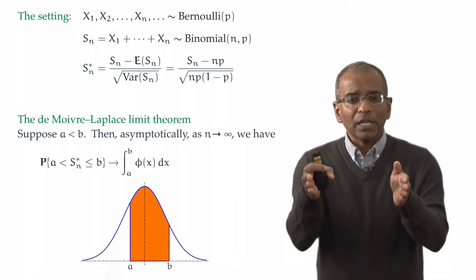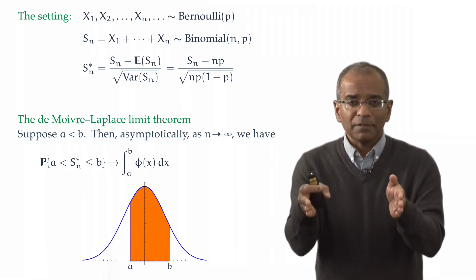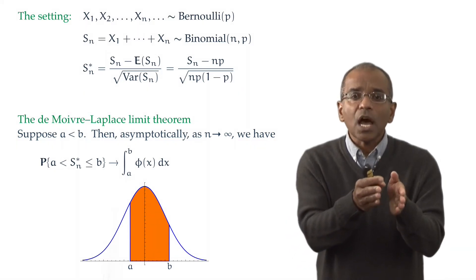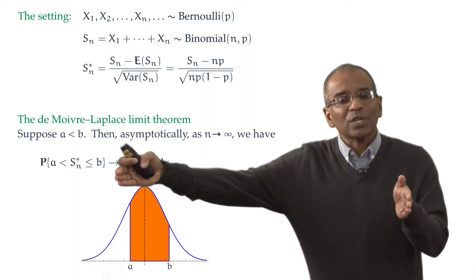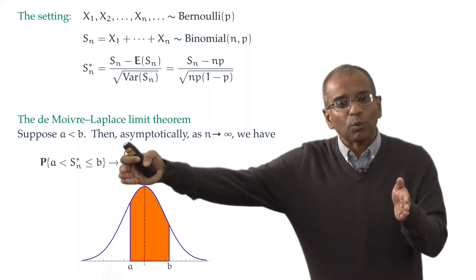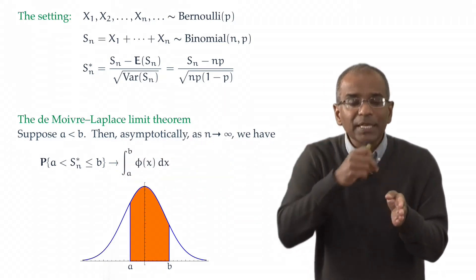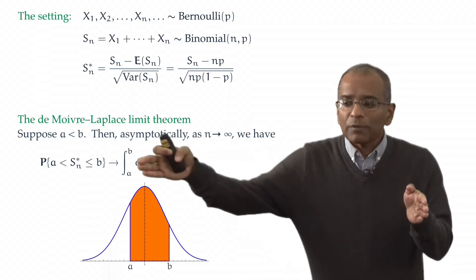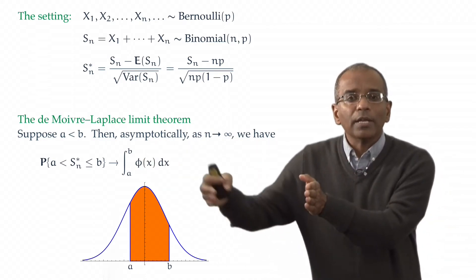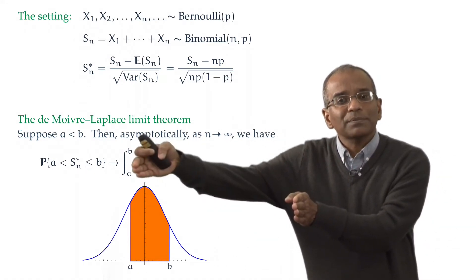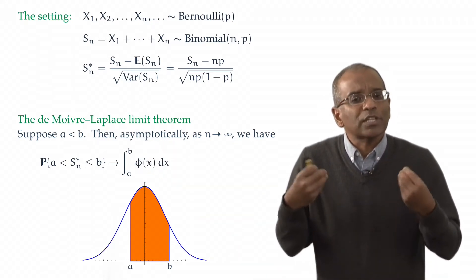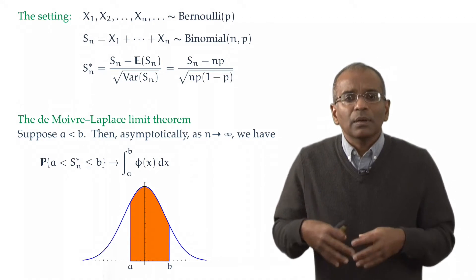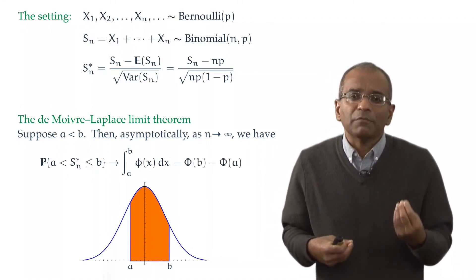We could relate this to the distribution function as follows. The area under the bell curve from A to B can be obtained first by looking at the entire area to the left of B. Of course, that's what we called the distribution function of the normal evaluated at B. And then take away from that entire area all the area from A to the left. And therefore, we get a simple form for this in terms of the distribution function: big phi of B minus big phi of A.